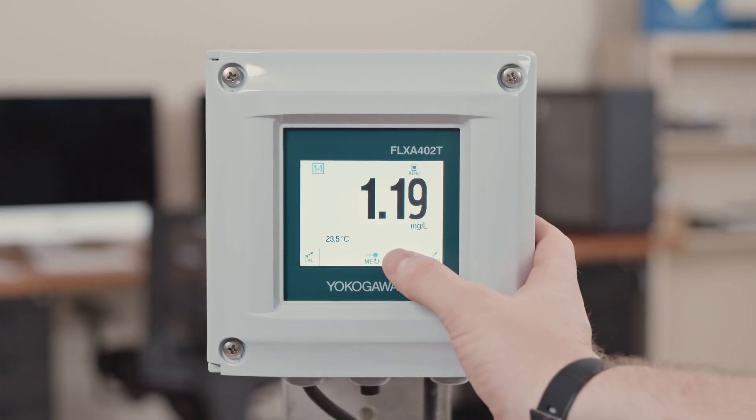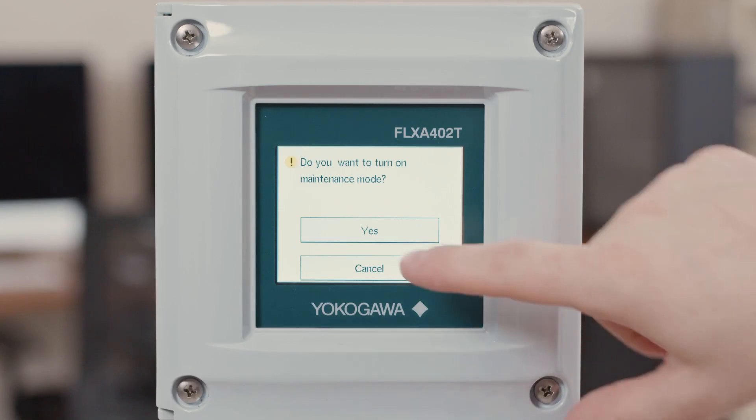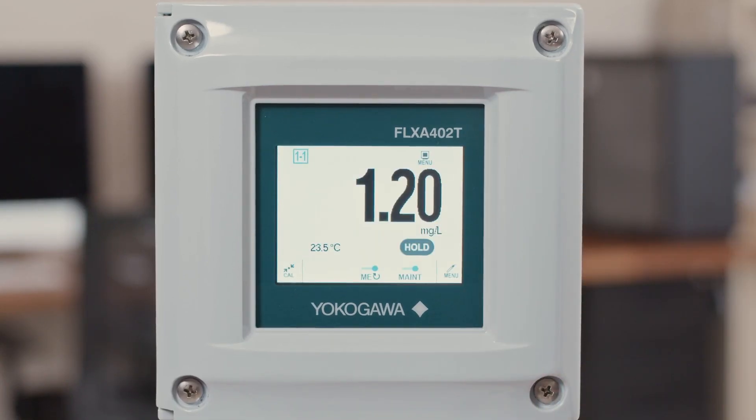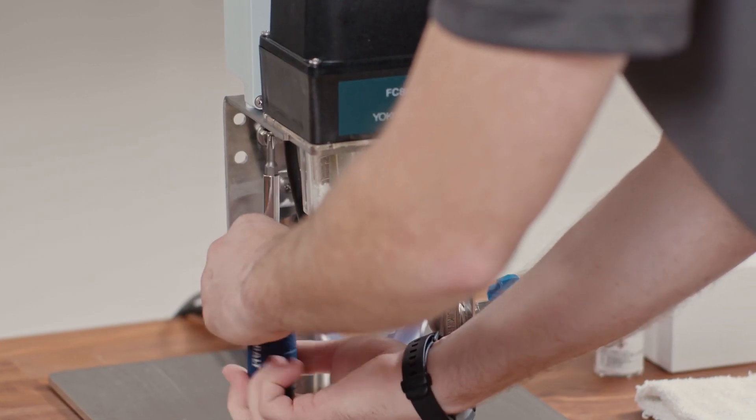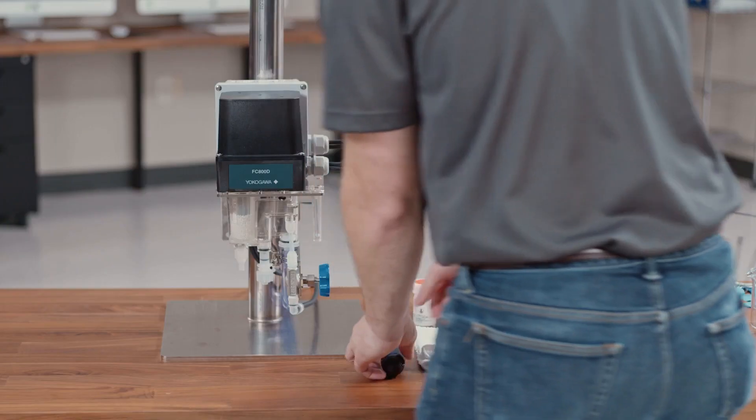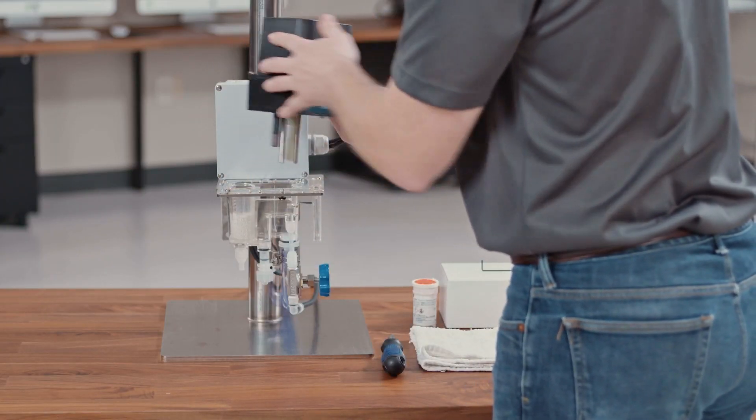The first thing you want to do is turn the analyzer into maintenance mode or remove power from the analyzer. Undo the two screws at the bottom of the flow cell and put the analyzer assembly into maintenance position.